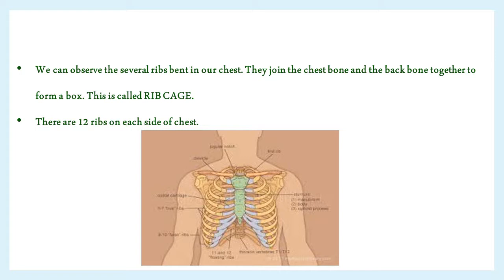Children, take a deep breath and hold it for a little while. Feel your chest bones and backbone by gently pressing the middle of the chest and back at the same time. We can observe several ribs in our chest. They join the chest bone and the backbone together to form a box — this is called the rib cage. There are 12 ribs on each side of the chest. Observe the rib cage image.